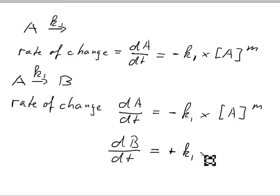So we can write plus, because B shows up, K1 times A to the power of M. Note we have A here because the appearance of B does only depend on A. It does not depend on B. Very often people make the mistake that they write B here, but that is obviously not correct.